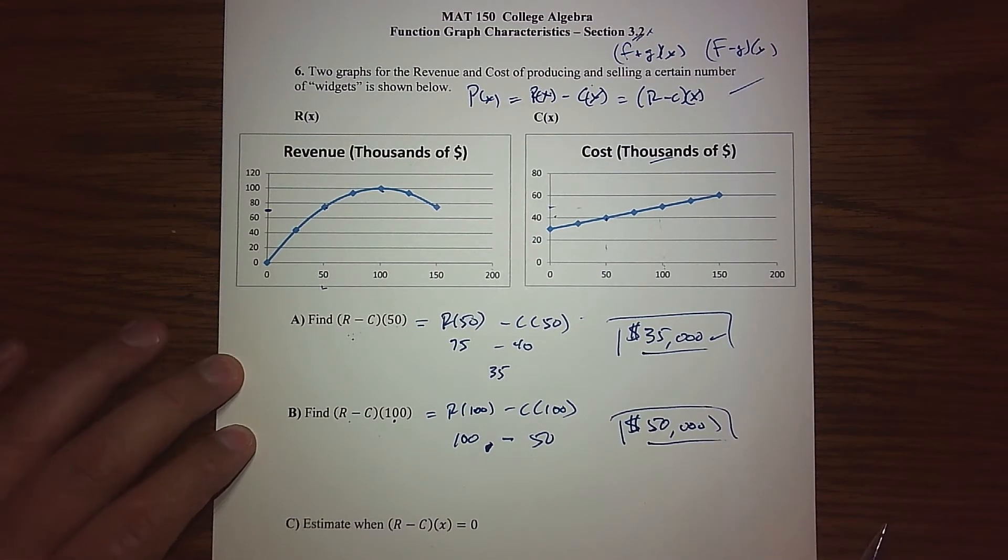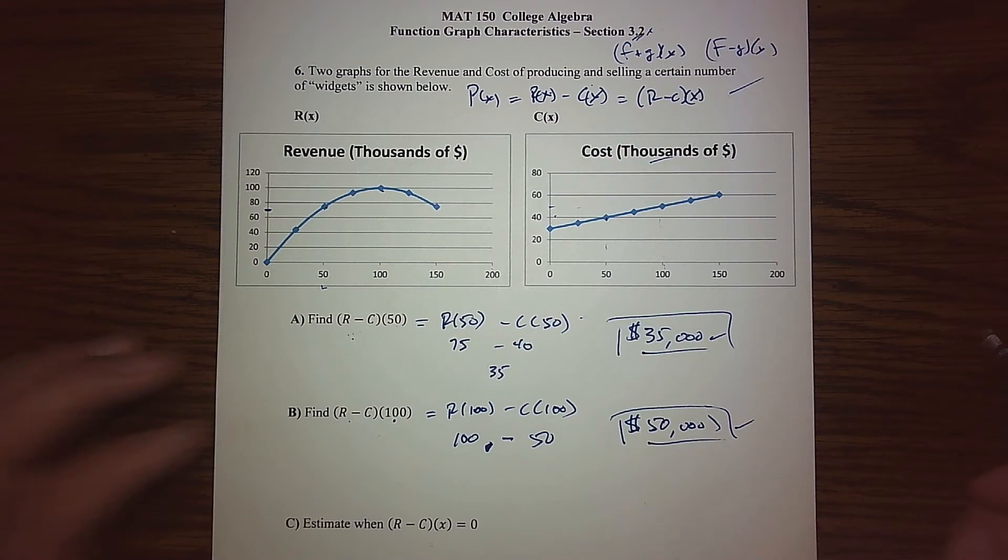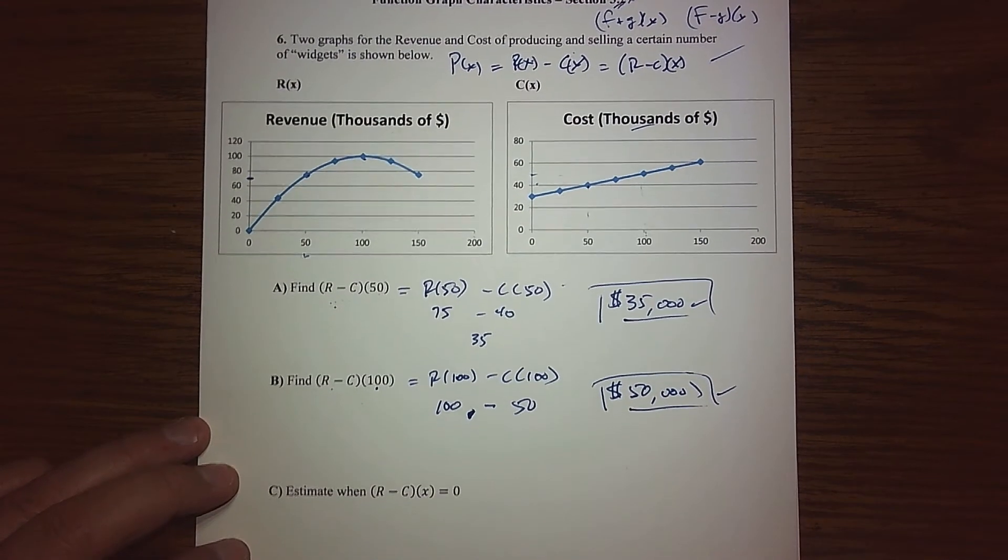It looks like my company is going to make about $50,000 if we produce 100 widgets. Perhaps that's what I want to do - I'll make sure my production line produces 100 of these things.